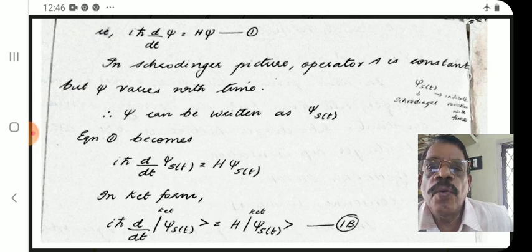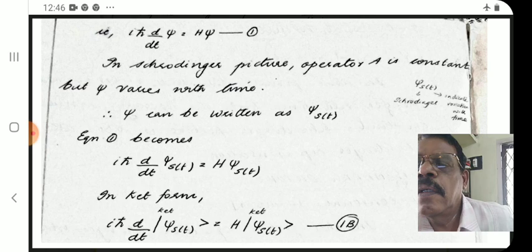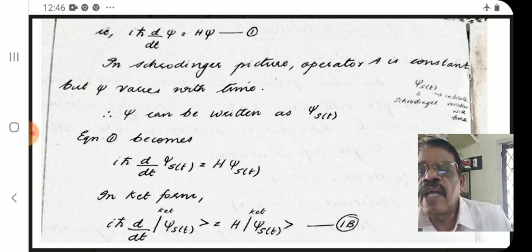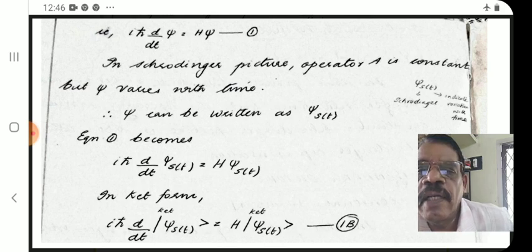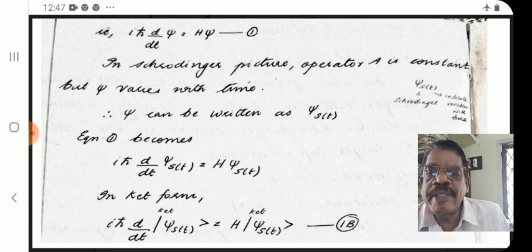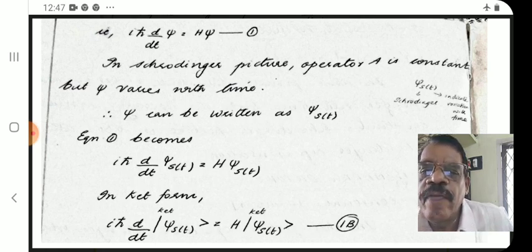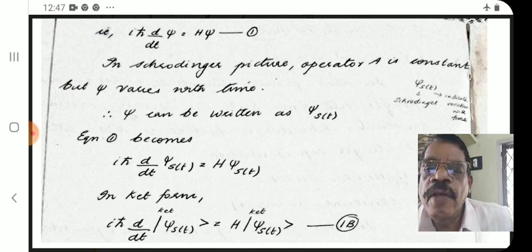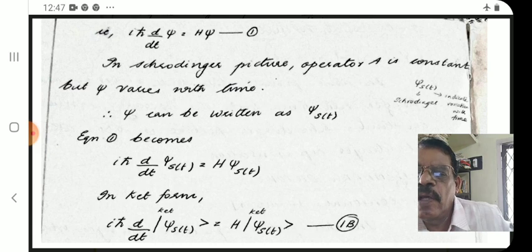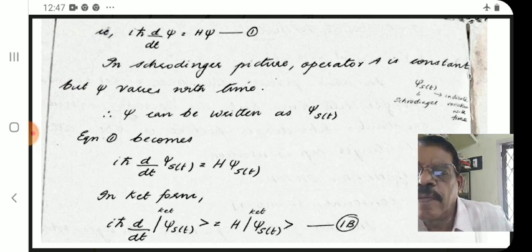In the Schrödinger picture, operator A is constant but psi varies with time. Therefore, psi is written as psi_S(t), where S corresponds to Schrödinger and t denotes time-varying. So equation 1 becomes: iℏ d/dt psi_S(t) = H psi_S(t), which is equation 1b.